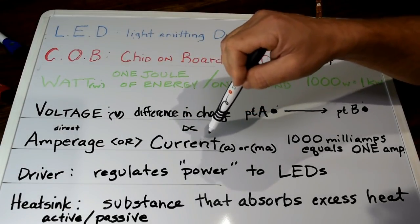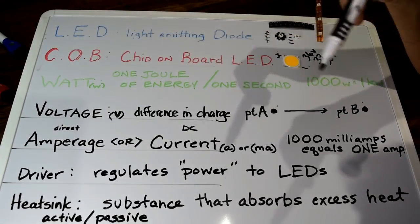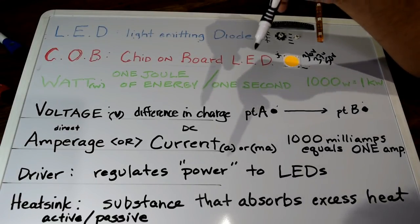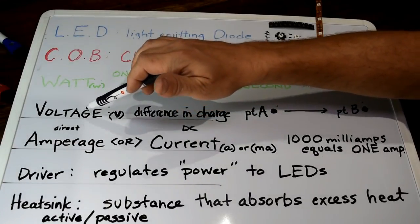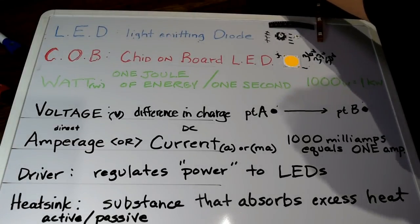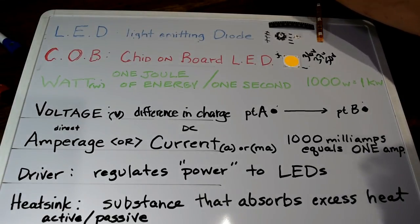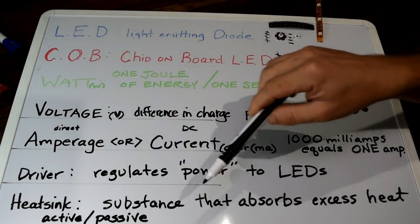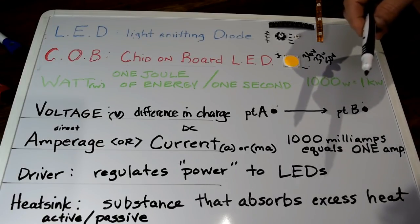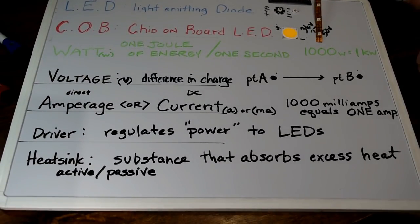To get that brightness you need what's called an LED driver. An LED driver is very similar to an HPS ballast or a metal halide ballast. All it does is regulate the voltage and amperage to the LED—just regulates the power. Here is an example of a driver. This is a Meanwell driver. The last term we're talking about is the heatsink. All this is is the substance you mount the LEDs to that gets rid of excess heat.